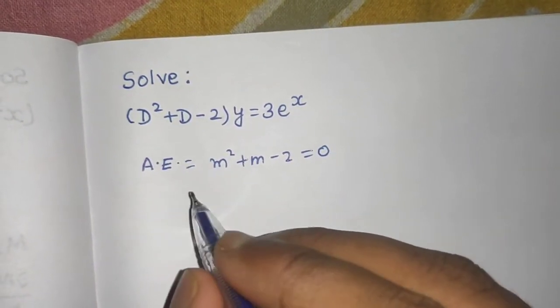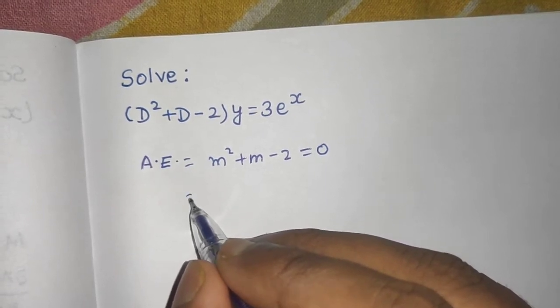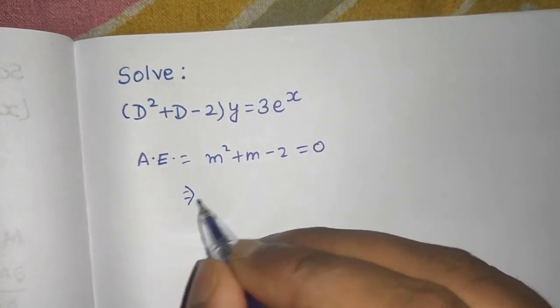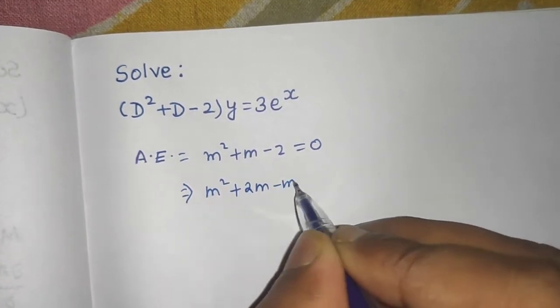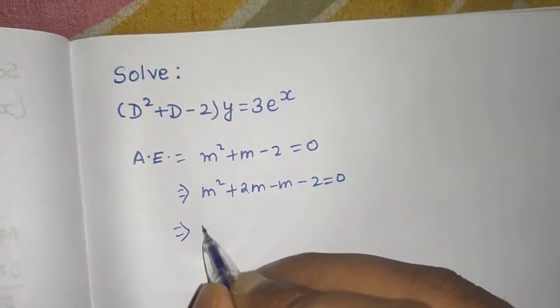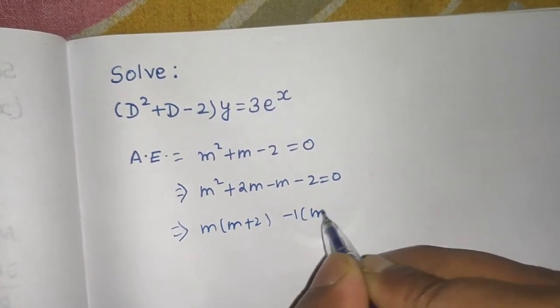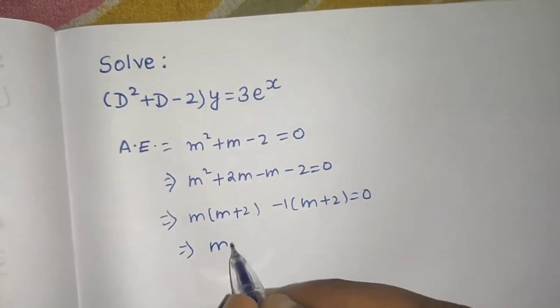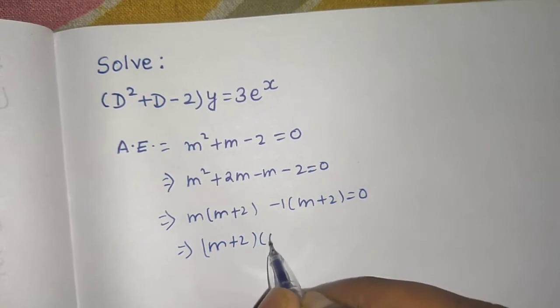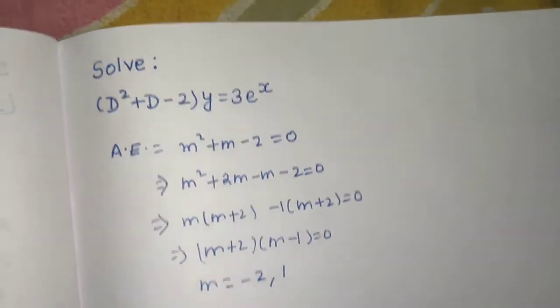On solving you will get m square plus 2 m minus m minus 2 equals to 0. m common m plus 2 minus 1 common m plus 2 equal to 0. You are getting m plus 2 times m minus 1 equals to 0. So you are getting m equals to minus 2 and 1.